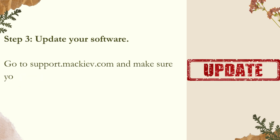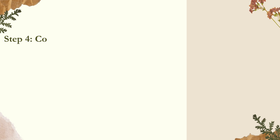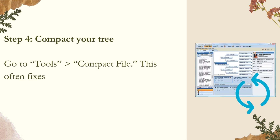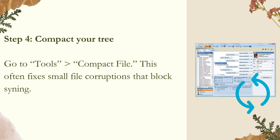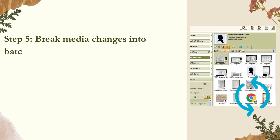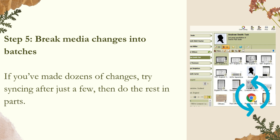Step three: update your software. Go to support.mackyv.com and make sure you're on the latest build of FTM 2024; use the in-app update tool too. Step four: compact your tree. Go to Tools > Compact File. This often fixes small file corruptions that block syncing.